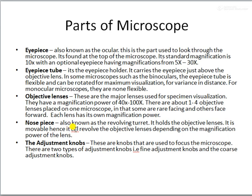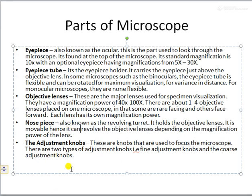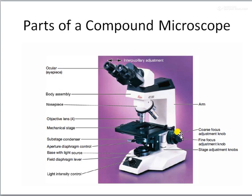We also have adjustment knobs, which are used to focus the microscope. There is the coarse knob, which you use first to focus, and then the fine adjustment knob for slight adjustments. Different people may need slight adjustments based on their eye variations, and these knobs are used to focus the image on the specimen so that you get a clearer view.